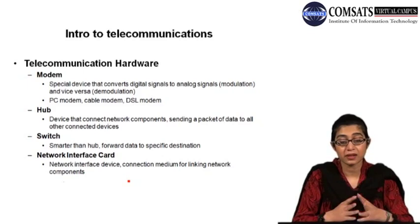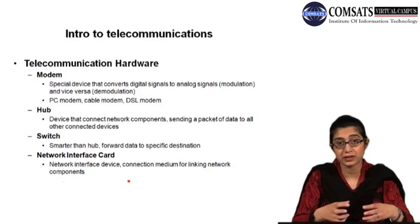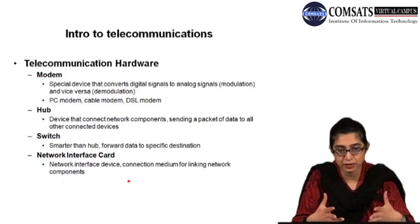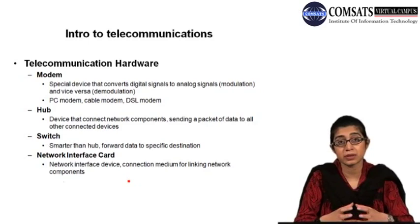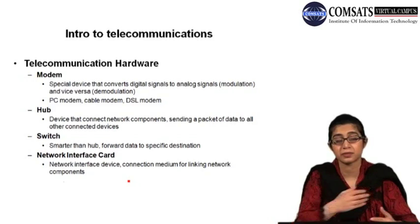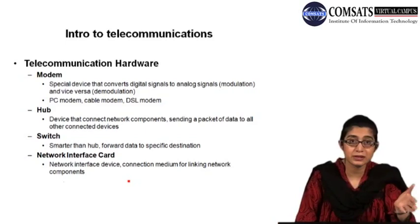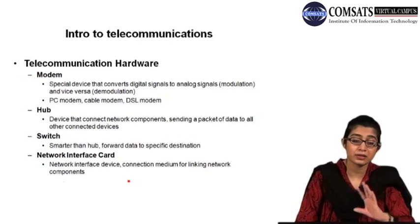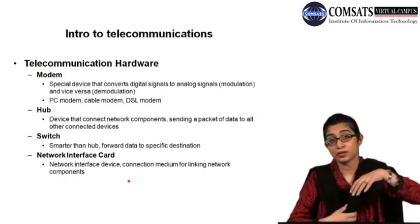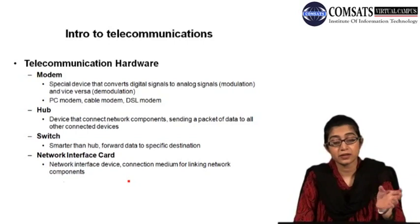The computer generates digital signals. If you are using a telephone line — for example, a very basic dial-up modem — it converts those digital signals to analog signals so they can be transferred on telephone lines or twisted pair cables. Converting digital signals to analog signals is called modulation, and converting analog signals to digital signals is called demodulation. So the modem is basically the kind of device that performs modulation and demodulation of the signal.